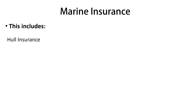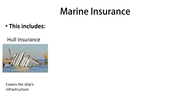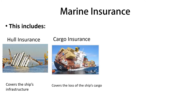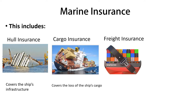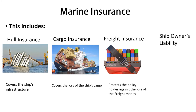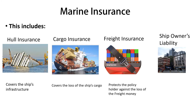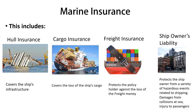There are four types of marine insurance. Hull insurance covers the ship's infrastructure — if anything happens to the ship's structure, you get compensation. Cargo insurance covers the loss of the ship's cargo. Freight insurance protects the policyholder against the loss of freight money in case of a delay, where cargo or ship owners may not receive payment. Finally, ship owner's liability protects the ship owner from hazardous events related to shipping, such as collision damage or injuries to passengers.